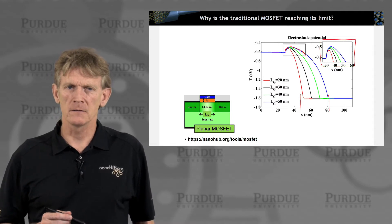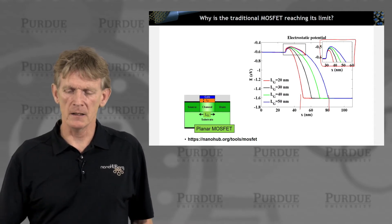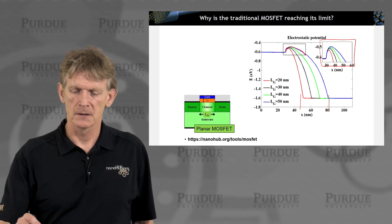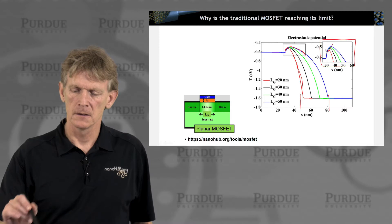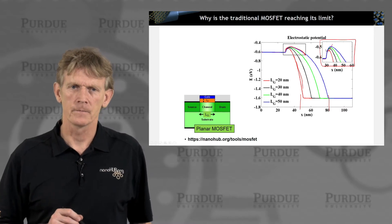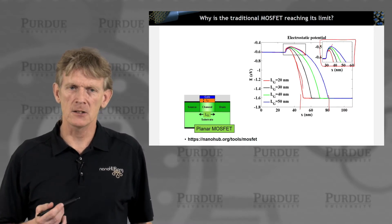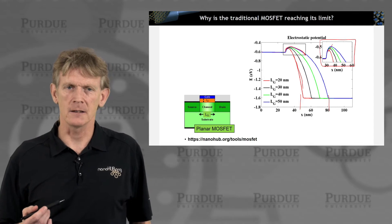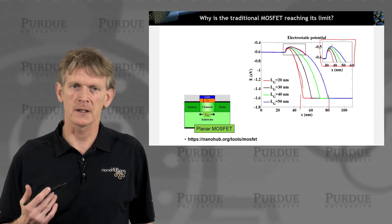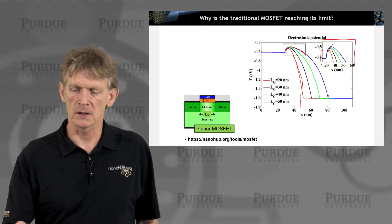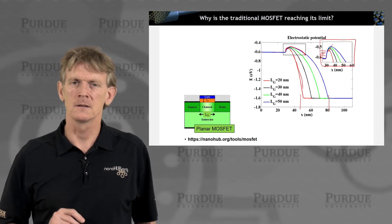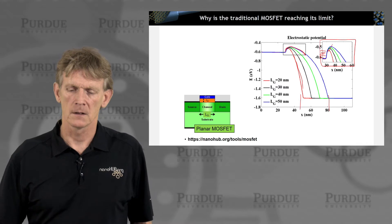If you make the device smaller and smaller, the drain potential starts to affect the slope here, and it affects up here the barrier height. Any small change in that barrier height has an exponential effect on the number of carriers that you're exposing that are sitting here in the source.